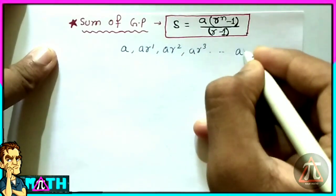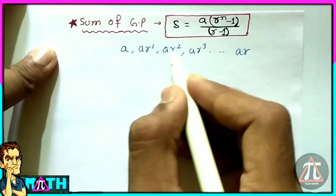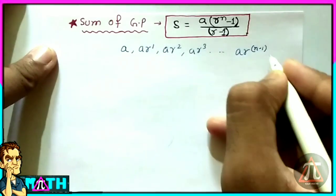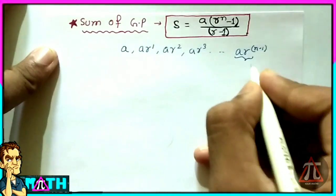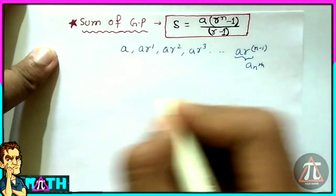...to n terms, so it becomes ar to the power (n-1), as in the second or first term, it's basically one less than its corresponding term. So this is basically the proof of the nth term of GP.